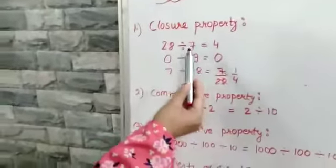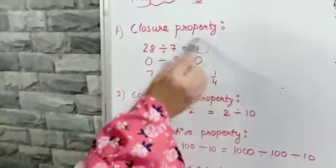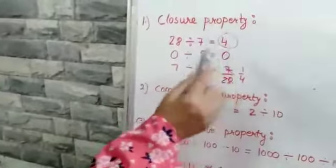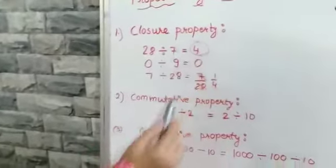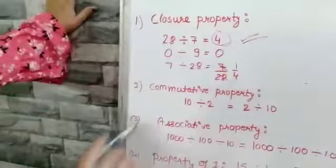After dividing, whatever the answer comes, the quotient 4 is also a whole number. So in this division, this property exists. Coming, let's take a few more examples.